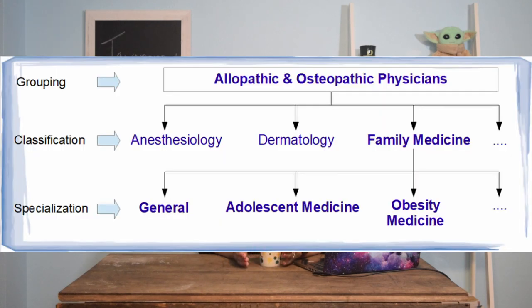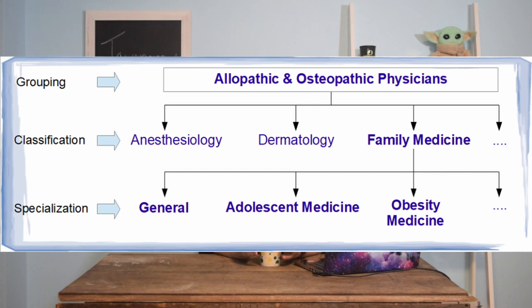The second part — the first four digits of the taxonomy code — is going to be your classification. That means it's going to indicate something like pediatrics, family medicine, or internal medicine: a broader group of whatever your focus is in medicine. The next five digits are going to be your area of specialization, breaking down what you focus on or what your specialty is within your classification.